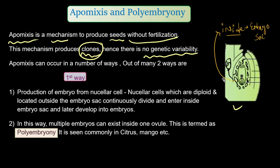If more than one nucellar cell gets into the embryo sac, there will be formation of more than one embryo. That condition is called polyembryony — poly means many, embryony means embryo. This polyembryonic condition is seen particularly in citrus plants such as lemon and orange, and in mango as well.